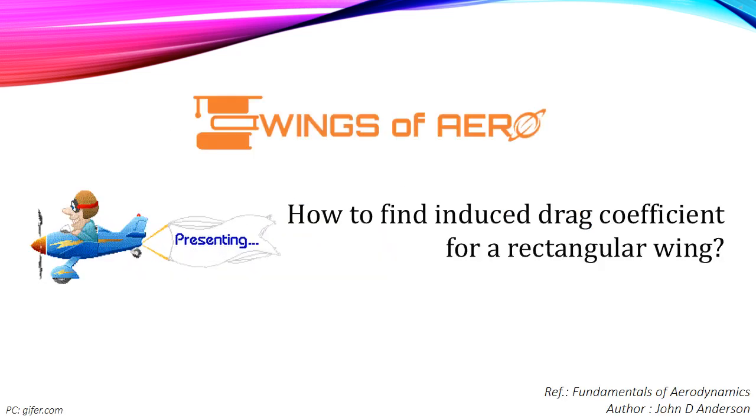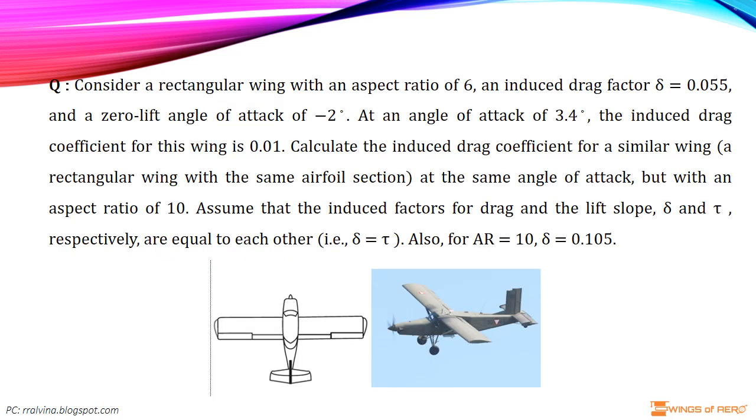We are going to learn how to find induced drag coefficient of a rectangular wing. Consider a rectangular wing with an aspect ratio of 6, an induced drag factor 0.055, and a zero lift angle of attack of minus 2 degrees.